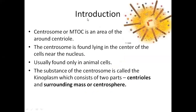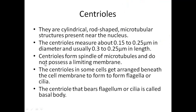A brief introduction regarding the structure of centrosomes. A centrosome is a structure consisting of two cylindrical structures surrounded by an amorphous area, and from this amorphous area there are radiating microtubules. This structure present near the nucleus is termed a centrosome. The three important components are: centrioles, the amorphous area, and the radiating microtubules. The centrosome consists of two main structures: centrioles and the surrounding mass called the centrosphere.